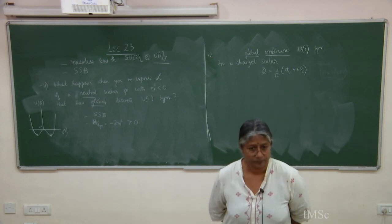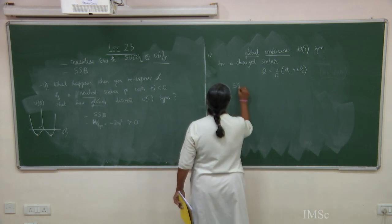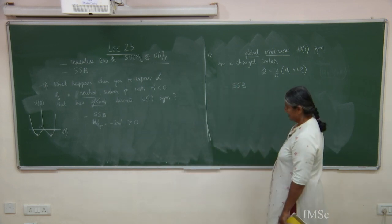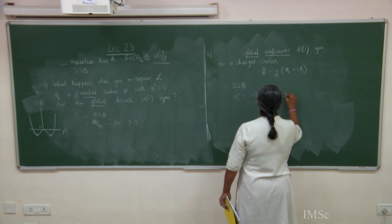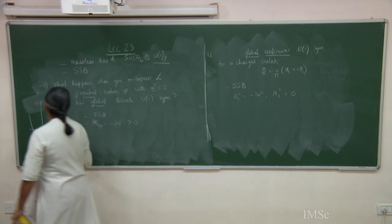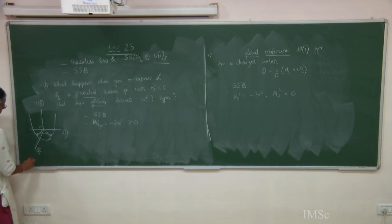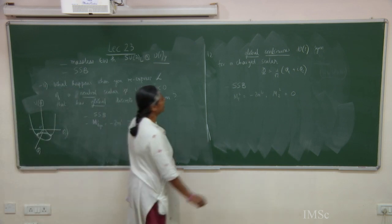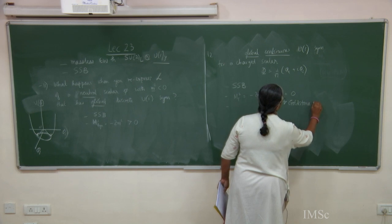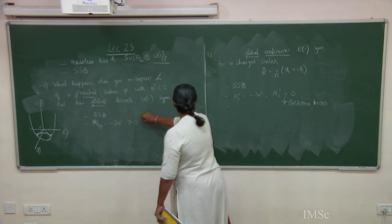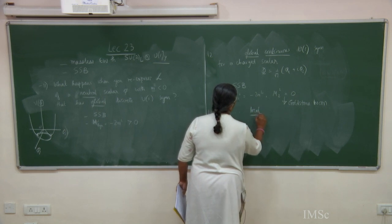Question 12: the same thing but for a global continuous U(1) symmetry for a charged scalar field. Spontaneous symmetry breaking occurs: one field gets mass m_1^2 equals minus 2m^2, and the second field phi_2 becomes massless. There is a continuous circle of minima, and therefore we get a Goldstone boson. Whenever you break a continuous symmetry you get a massless particle.